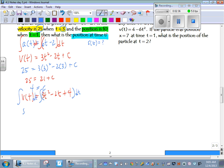Antiderivative of velocity is position because position, derivative of the position, is velocity. So we get t cubed minus t squared plus 4t plus c.